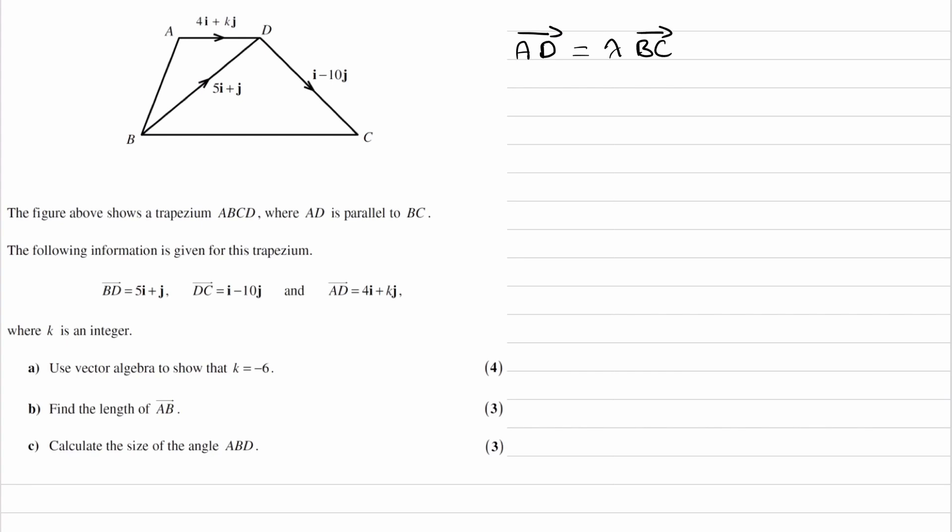Let's look at the rest of the question first. So we're given the vectors BD, DC, AD, and all of those things are drawn on our diagram. We're trying to work out what K is, where K is in the vector AD.